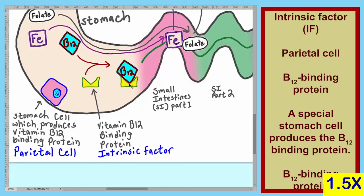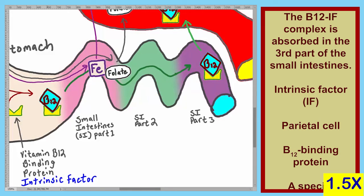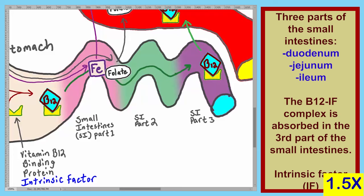Vitamin B12 binds to intrinsic factor to produce the vitamin B12-intrinsic factor complex. This complex travels to the small intestines and is absorbed across the third part of the small intestine. There are three parts of the small intestine: the first part is the duodenum, the second part is the jejunum, and the third part is the ileum.